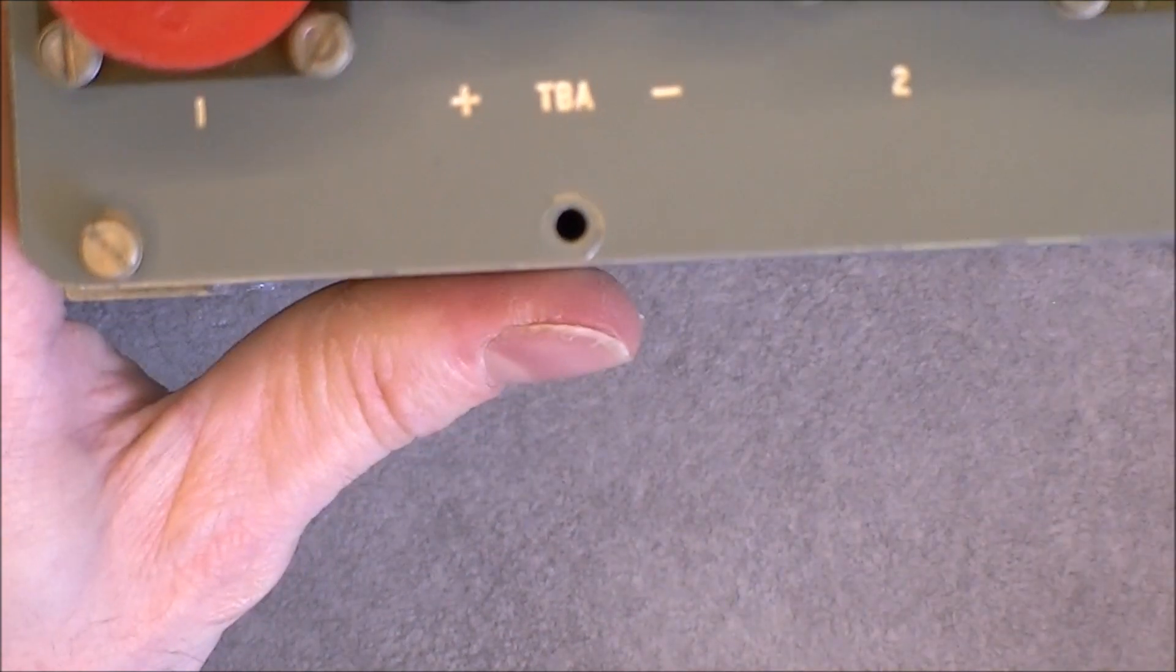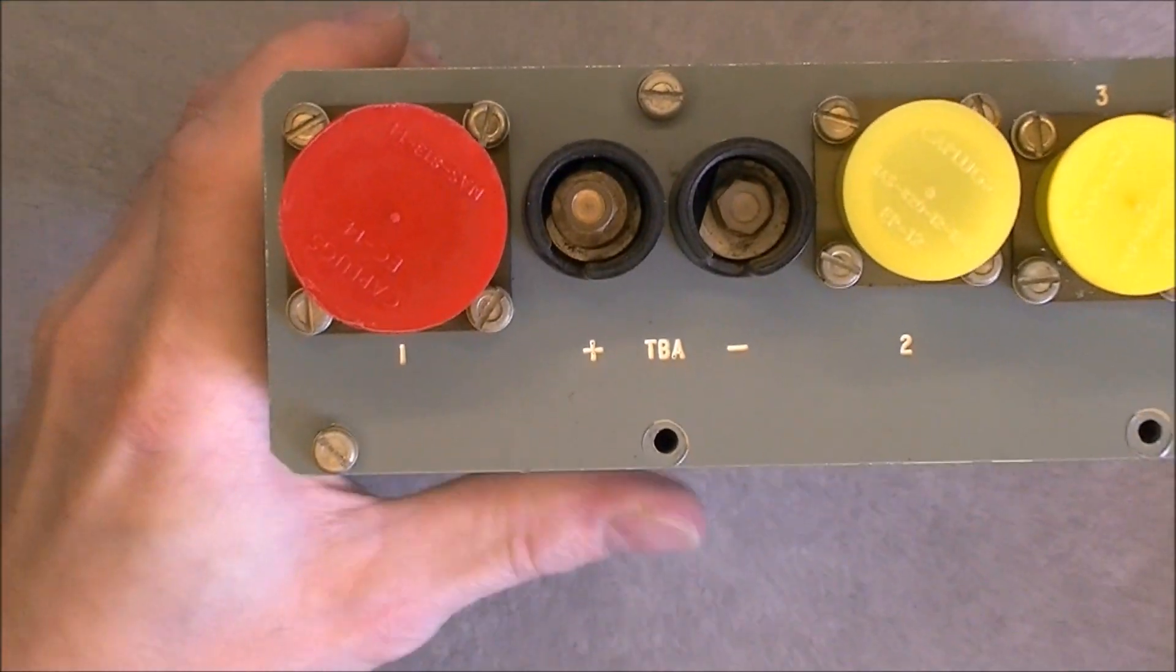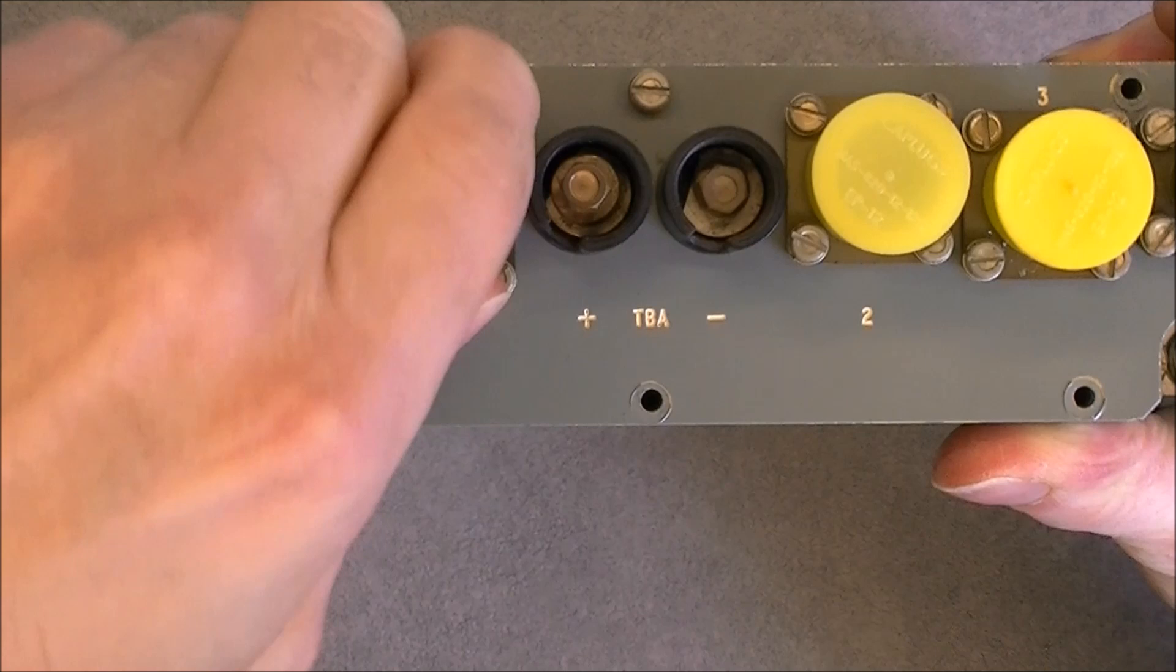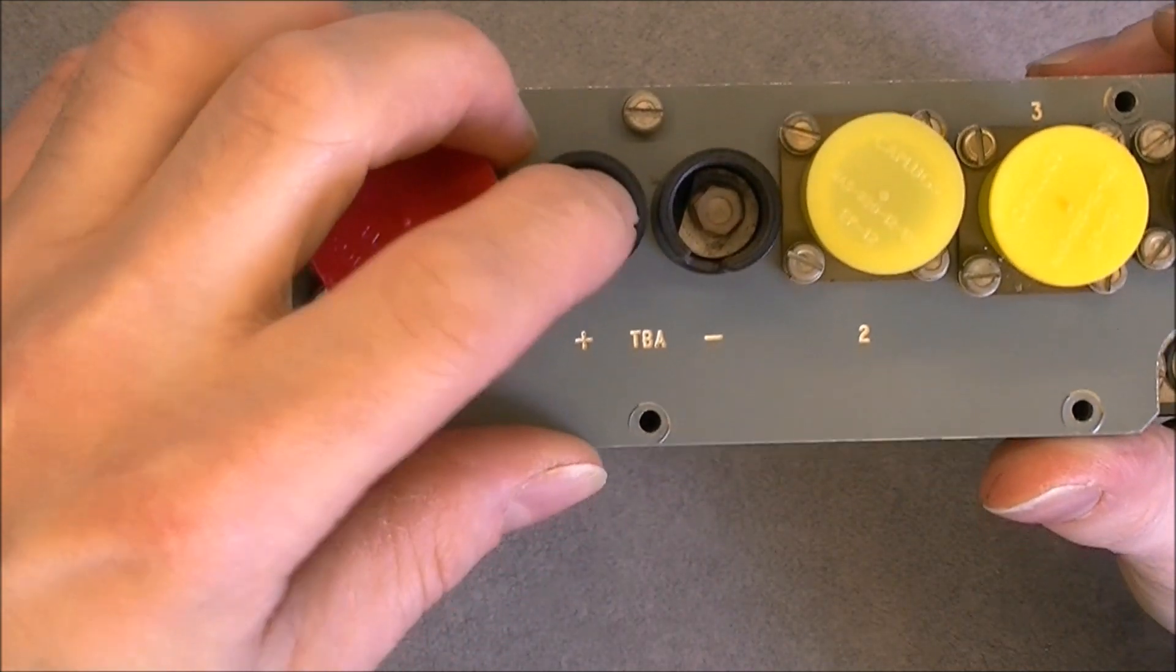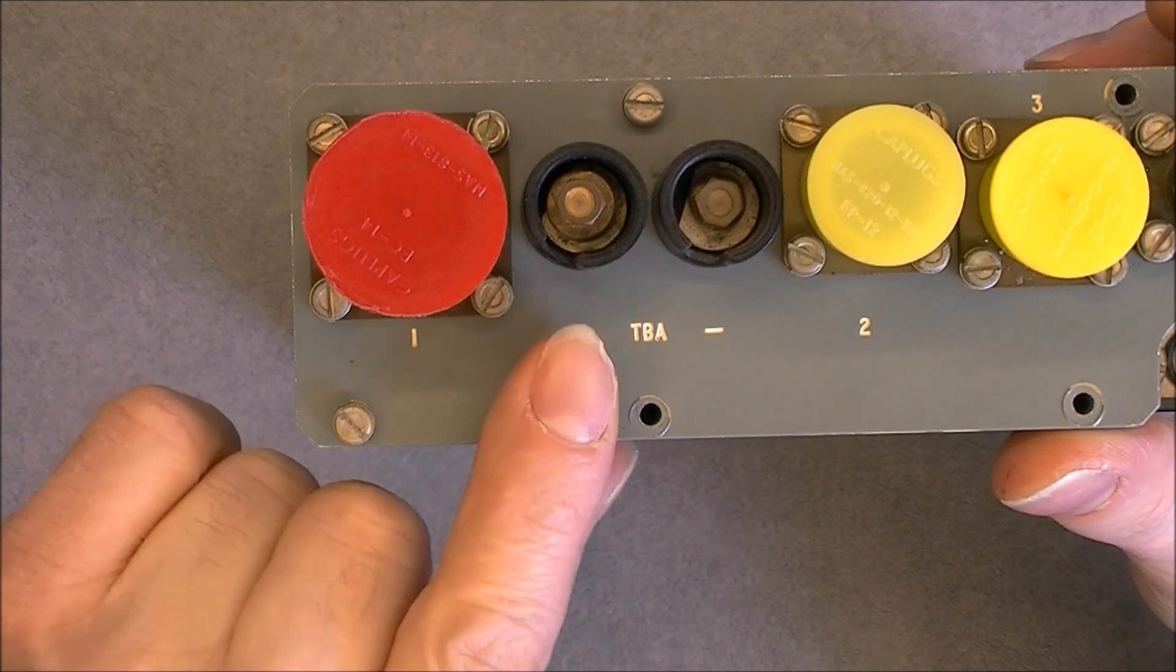So we have the connector panel. We have one big plug here with cover. Two screw terminals. This one seems a little bit bent.